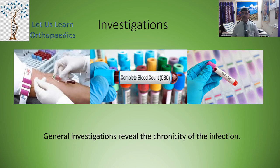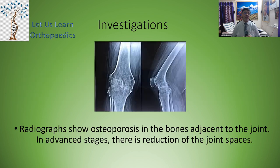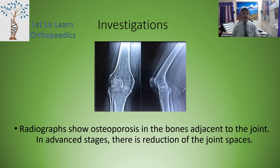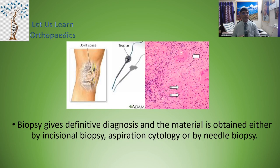Coming to investigations: general investigations like hemoglobin percentage, total blood count, and complete blood picture all reveal the chronicity of the infection. The main investigation is the radiograph. X-rays show osteoporosis in the bone adjacent to the joint because of the inflamed synovium causing increased vascularity around articular surfaces. In advanced stages, there is a reduction in joint space, as seen in this particular x-ray. The next investigation is biopsy, which gives a definitive diagnosis; material is obtained by incisional biopsy, aspiration cytology, or needle biopsy.